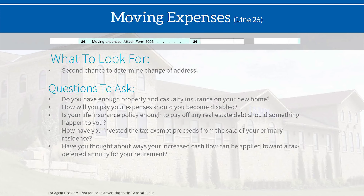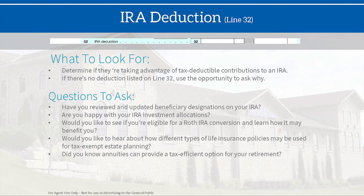Line 26 covers moving expenses, indicating a new residence — similar questions to the address line section. Line 32 is the IRA deduction. Look to determine if they're taking advantage of a tax-deductible contribution to an IRA. If there is no deduction, use the opportunity to ask why — it may be that they already have a retirement plan making the IRA non-deductible. This could open a conversation about a Roth IRA or a non-qualified annuity as alternatives.